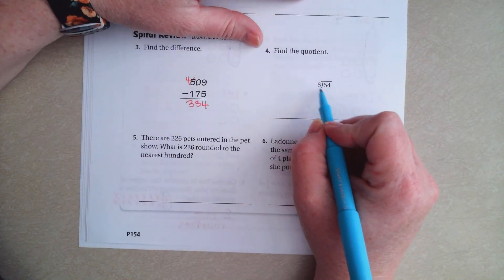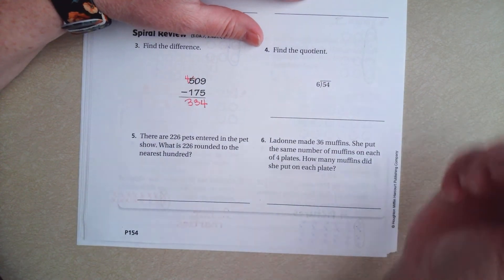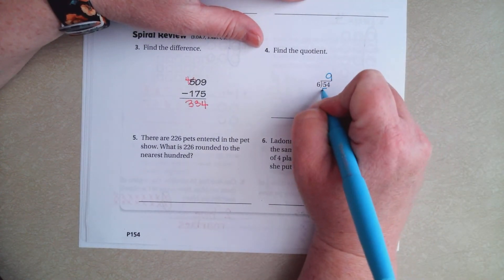We're going to find the quotient. 6 goes into 54 how many times? Well, 6 times 9 is 54.